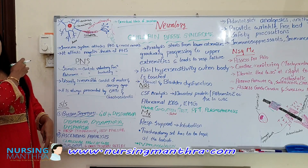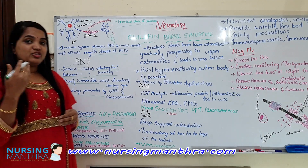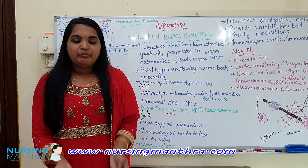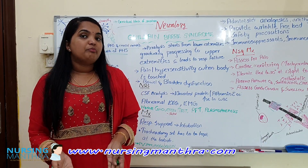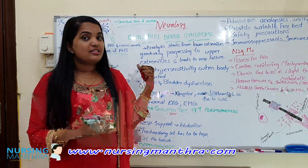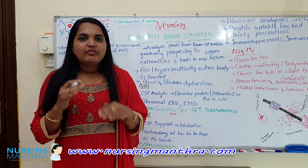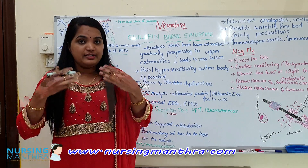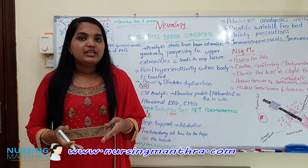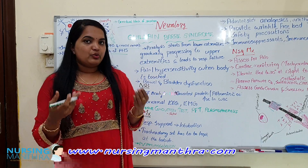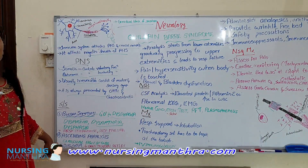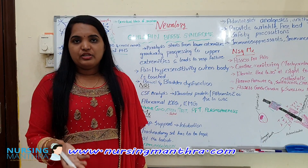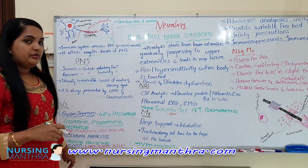There is paralysis of the extremities. In Guillain-Barré syndrome we see ascending paralysis — from down to upwards, the progression of disease symptoms goes from the feet upward toward the chest and neck. Ascending paralysis is the classical sign of Guillain-Barré syndrome. If anyone asks what is the classical sign of GBS — it is ascending paralysis.